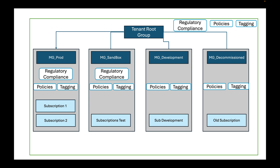Looking at the top where it says regulatory compliance, you have policies and tagging. You can say the regulatory compliance we need to follow throughout the whole organization — for instance, NIST 853 — and apply it at that level. There are also certain policies you want to propagate throughout the whole organization that you can apply there. Tagging is something a little more specific — you might want to drop that down to your production environment or other management groups.